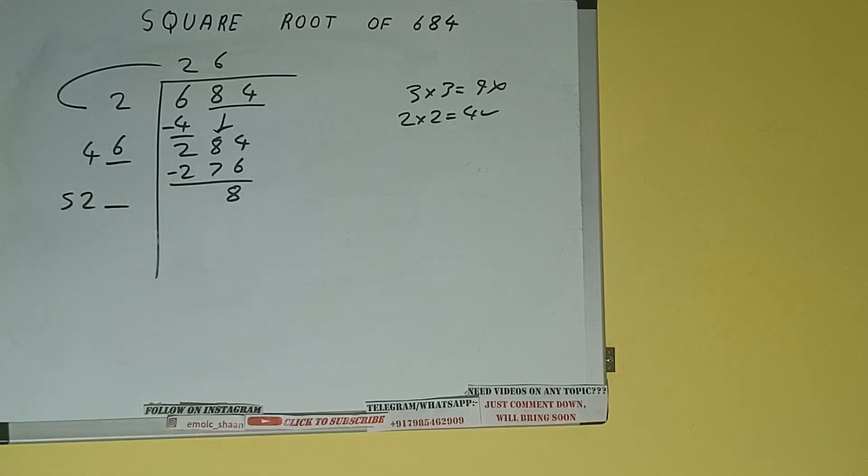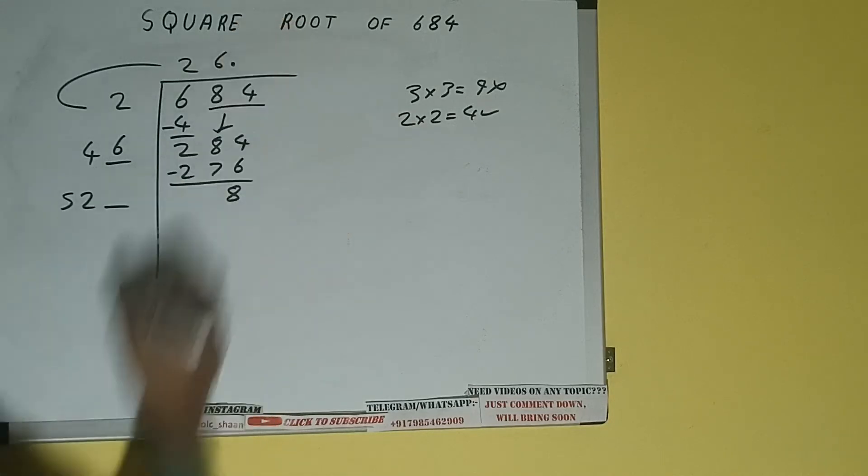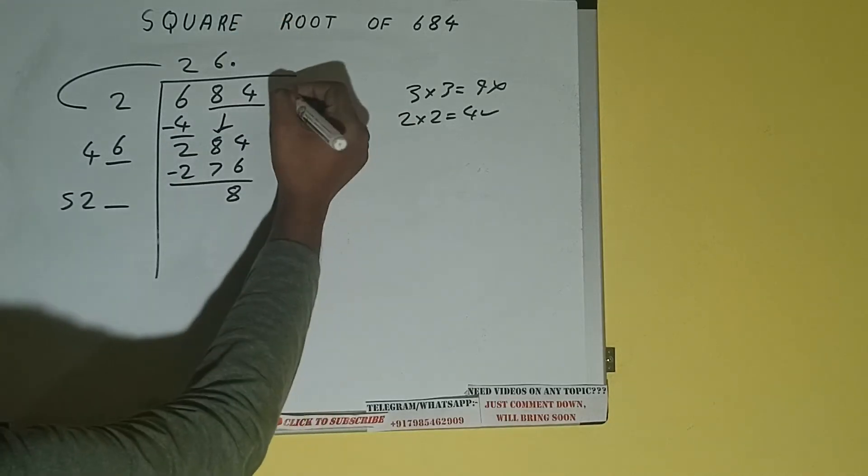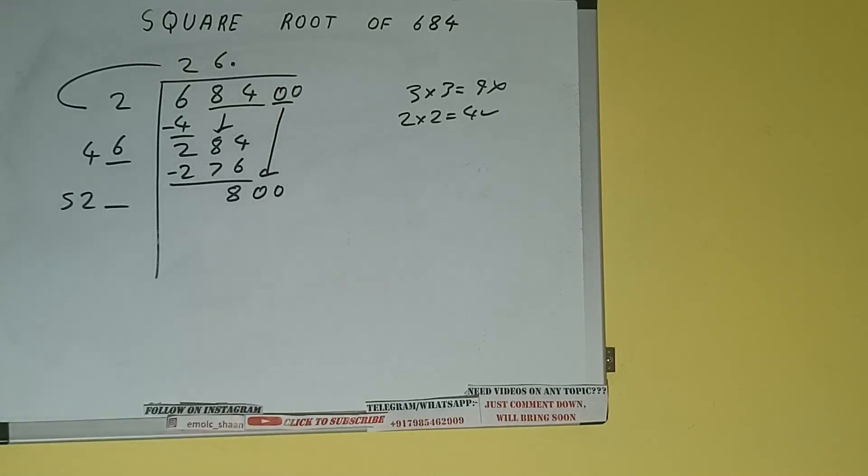Write it here and keep a digit extra. And this number we need to make it big, but we don't have more pairs, so we'll put a decimal. Once I put a decimal, we can bring a pair of zeros down, and it will be 800.